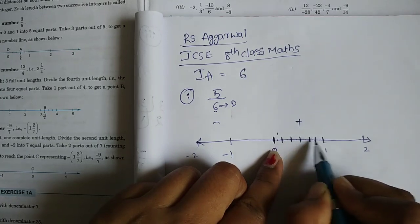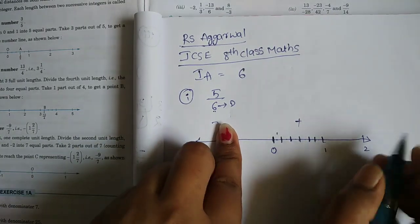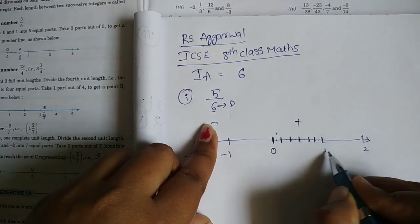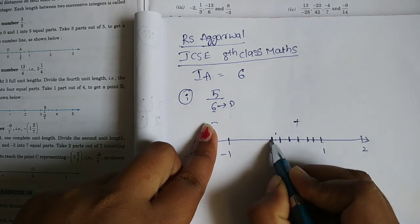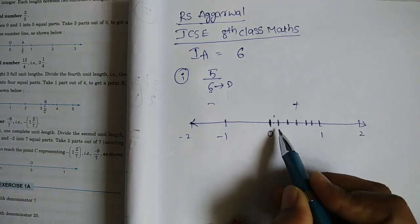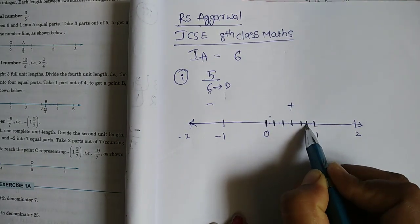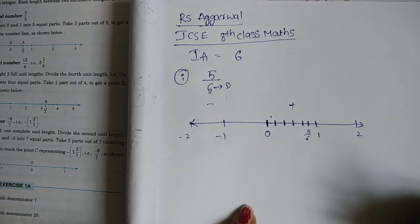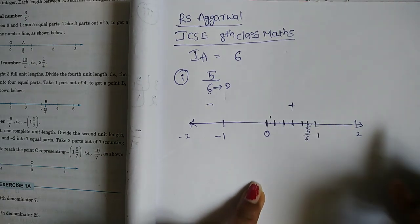Six parts means we need 5 lines drawn in the middle — one, two, three, four, five lines in the middle. Now we represent 5 by 6. This is 5 by 6 on the number line.